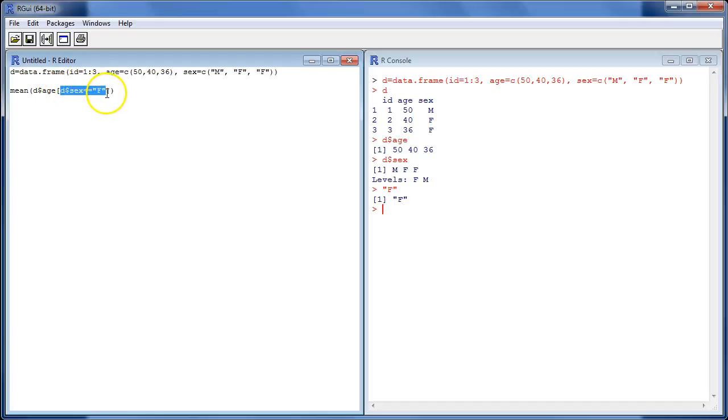And when we run this part of the code, we compare D dollar sex to F. As you can see, we get a logical vector containing false, true, true.